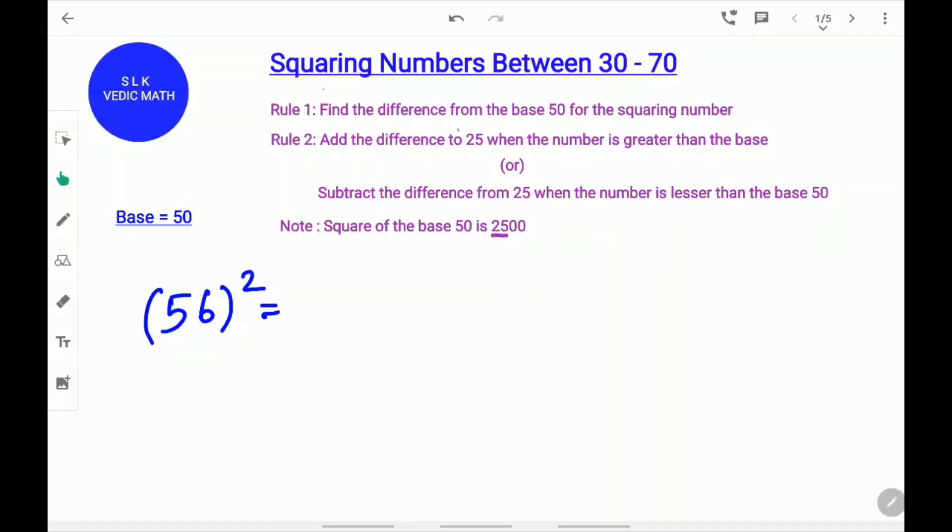Hi, welcome to Shruti Lakshmi's Ritual Classroom. Today we are going to learn an easy and fast way of squaring numbers between 30 to 70. Let's try 56 square.